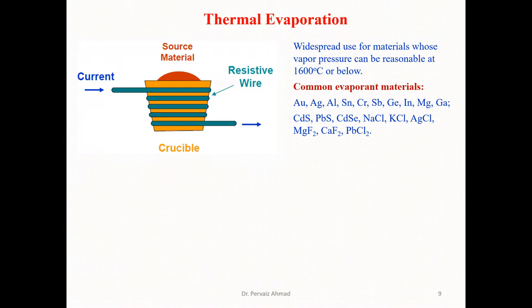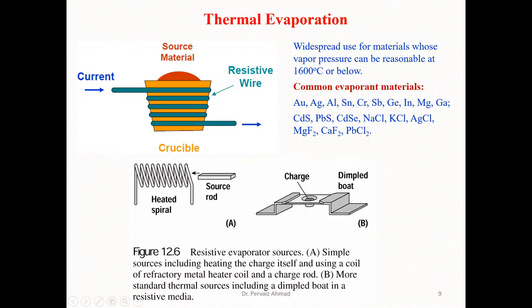Common evaporant materials used in thermal evaporation include gold, silver, aluminium, titanium, and chromium. There are various materials that can be utilized as evaporant materials in thermal evaporation.